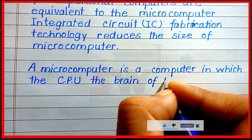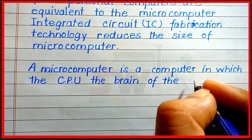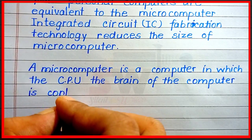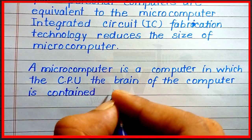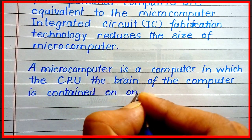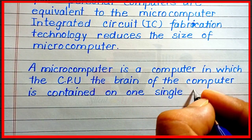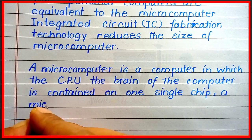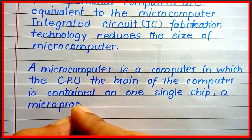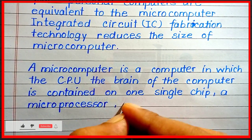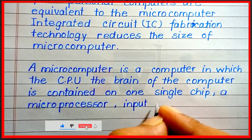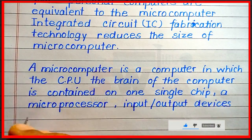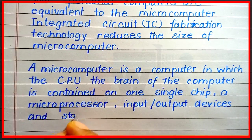the brain of the computer, is contained on one single chip — a microprocessor — along with input-output devices and a storage unit.